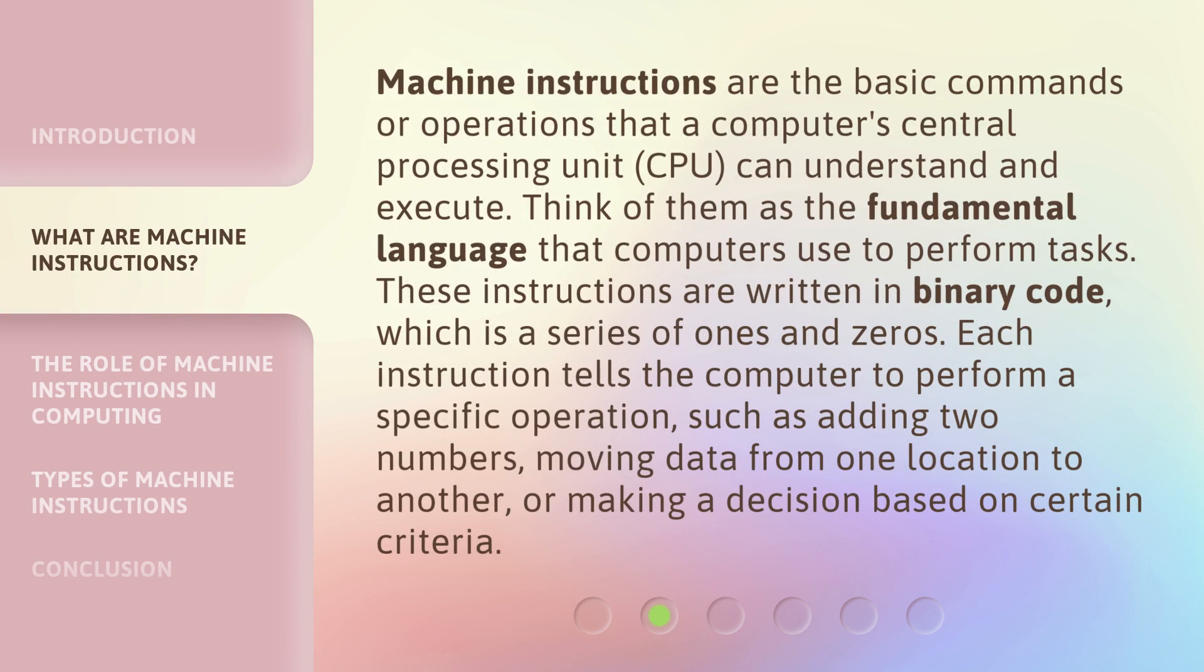Machine instructions are the basic commands or operations that a computer's central processing unit, CPU, can understand and execute. Think of them as the fundamental language that computers use to perform tasks. These instructions are written in binary code, which is a series of ones and zeros. Each instruction tells the computer to perform a specific operation, such as adding two numbers, moving data from one location to another, or making a decision based on certain criteria.